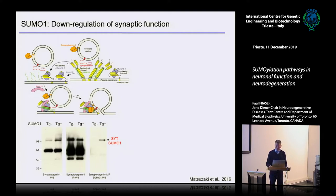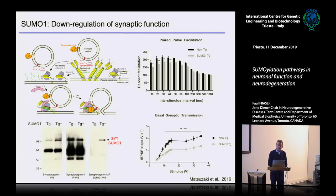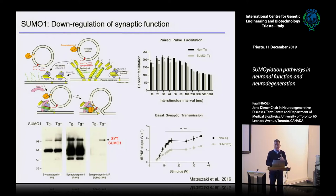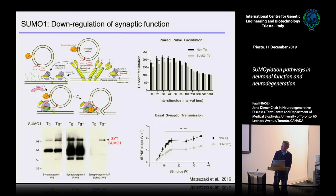The outcome of SUMOylation of synaptotagmin and other synaptic proteins seems to be largely negative. With collaborator Otavio Arancio at Columbia University, we looked at the electrophysiology. Paired pulse facilitation, a measure of synaptic plasticity and general synaptic function, was significantly reduced in the transgenes. And basal synaptic transmission — a measure of LTP in these animals — was very impaired. So SUMOylation of synaptotagmin and the synapsins seems to down-regulate synaptic transmission and function, acting as a negative regulator.